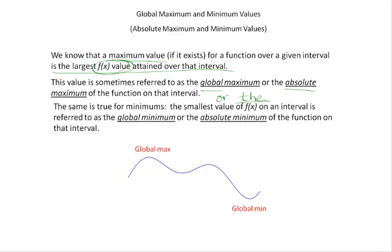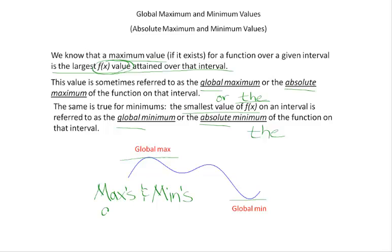The same is true for minimums: the smallest output value of the function on an interval or its entire domain is referred to as global, absolute, or 'the' minimum. That is the lowest output value on the interval in question; the max is the highest output. Max's and min's are output values — they are range values, they are y-values. You need to remember that.